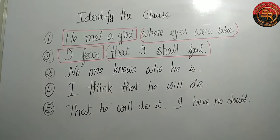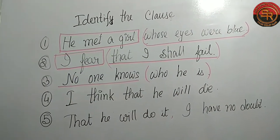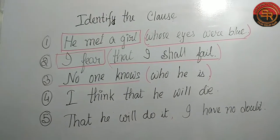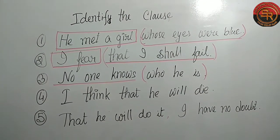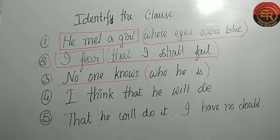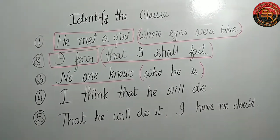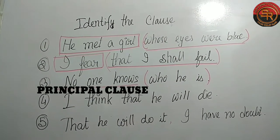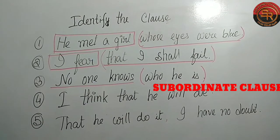Let's move on to the third question: 'No one knows who he is.' Here 'no one knows' is the principal clause, and 'who he is' is making a relation to the principal clause, so 'who he is' is the subordinate clause. In this sentence we also have two finite verbs: 'knows' and 'is'.